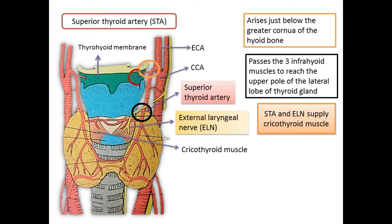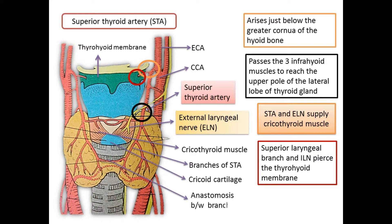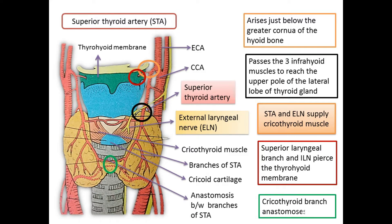Apart from its terminal branches to the thyroid gland, the superior thyroid artery gives one important branch — the superior laryngeal artery — which pierces the thyrohyoid membrane in company with the internal laryngeal nerve. It also gives a sternocleidomastoid branch and a cricothyroid branch that anastomoses with the artery of the opposite side in front of the cricovocal membrane.